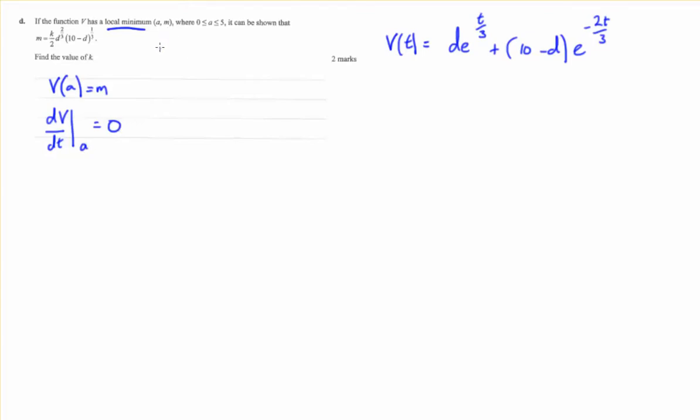And we want to find m in terms of this thing here, and then we can find the value of k after that. So what do we do? Well, we can sub in a, we know that m equals d times e to the power of a on 3 plus 10 minus d e to the negative 2a on 3. We know that.